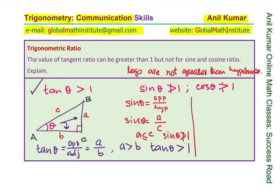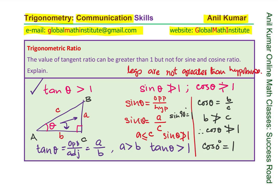So that is the reason. Similarly, for cosine also, cos theta is equal to B over C, and we know that B is not greater than C. Therefore, we can say that cos theta is not greater than 1. The maximum value of sin theta and cos theta can be equal to 1 — that is when cos of 0 degrees is 1 and sin of 90 degrees is 1. But it is never greater than 1.